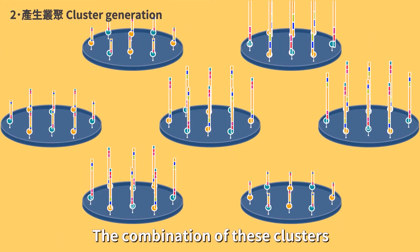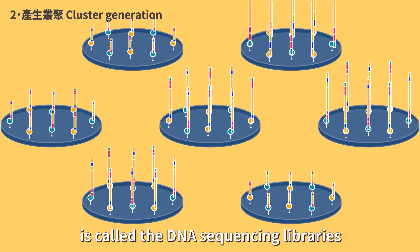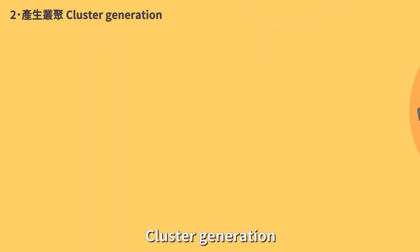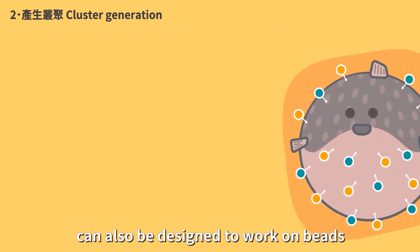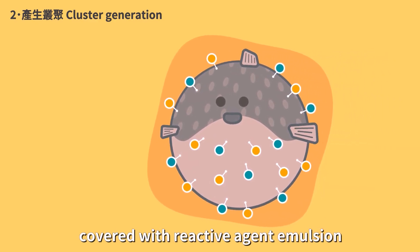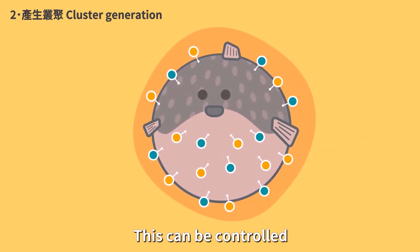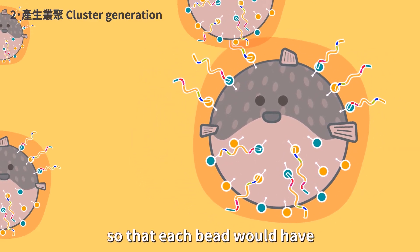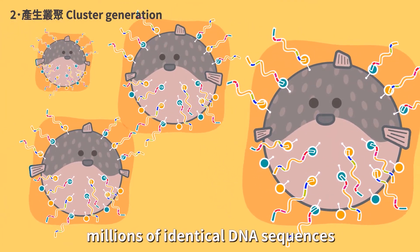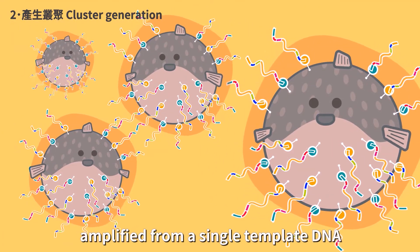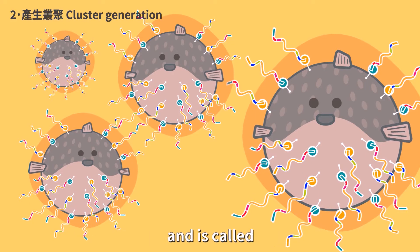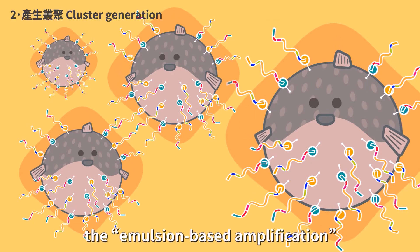The combination of these clusters is called the DNA sequencing libraries. Cluster generation can also be designed to work on beads covered with reactive agent emulsion. This can be controlled so that each bead would have millions of identical DNA sequences, amplified from a single template DNA, and is called emulsion-based amplification.